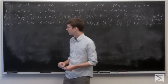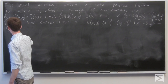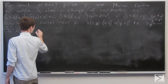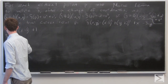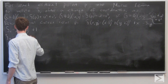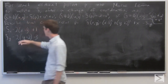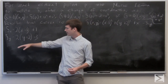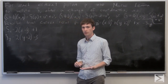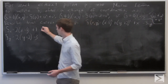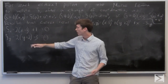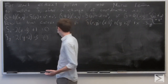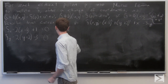First, let's figure out what the critical points are. The partial derivative of f with respect to x is 2 times the quantity (x minus 1) plus 1. And f sub y is 2 times the quantity (y plus 2) minus 3. Setting each component of the gradient equal to zero, we find that x equals one half and y equals negative one half.